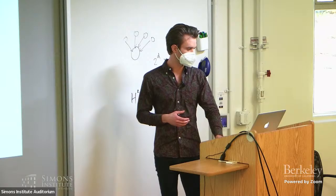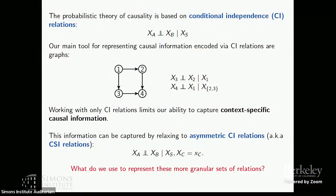So what's really the problem that we're interested in here? At the basis of the probabilistic theory of causality right now, the starting point is conditional independence relations that we observe in our observational distribution, and then we represent those with a DAG model. But one immediate limitation is that working with only these CI relations limits our ability to capture context-specific causal information — things like asymmetric CI relations or CSI relations, where in addition to our regular conditioning set, we have some realization of a set of variables. So how do we go about representing these more granular sets of relations and the context-specific causal information they encode?